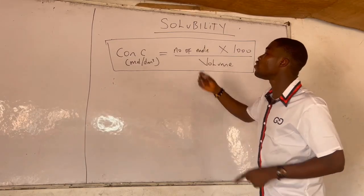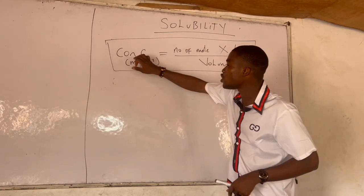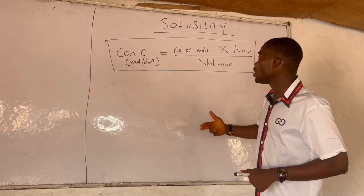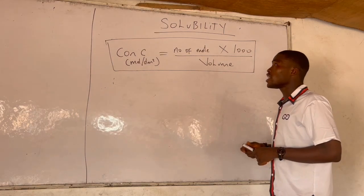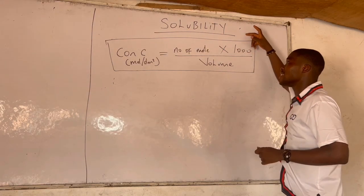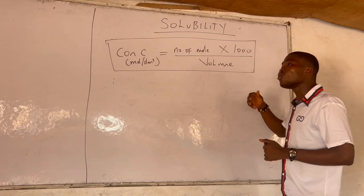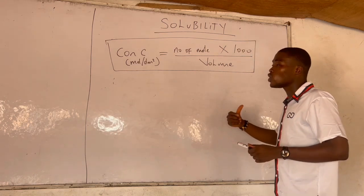Since this is a formula to calculate for concentration of a species in a solution, we already established that solubility is the concentration of solutes in a solution.